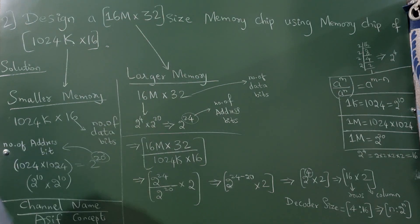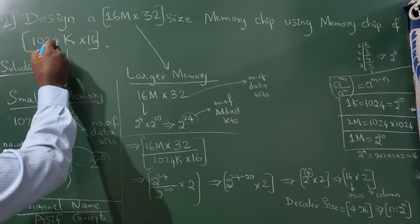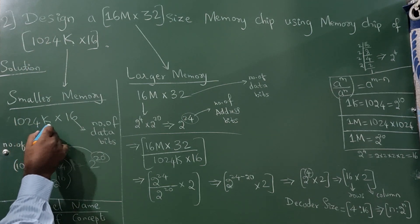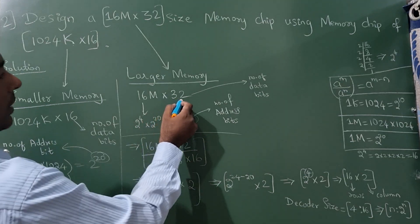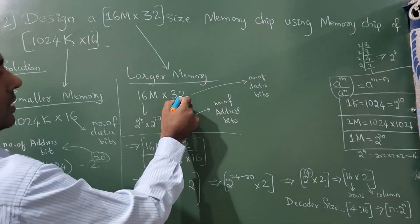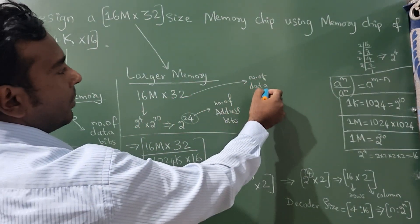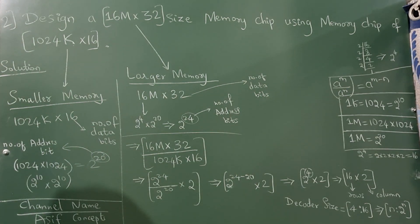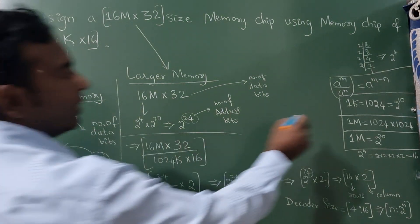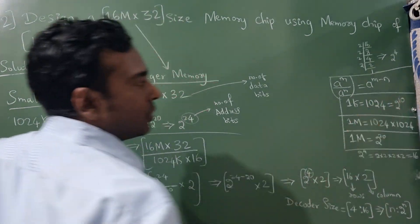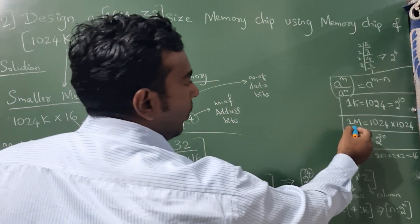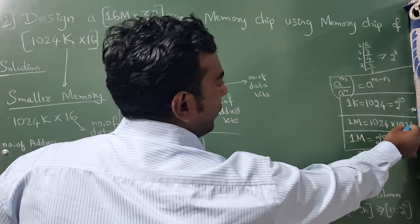Okay, so I have written here 1024K into 16. This 16 is number of data bits. Here 16M into 32, this 32 is your number of data bits. Now K value from here it is 1024, so you can write 2 raise to 10.